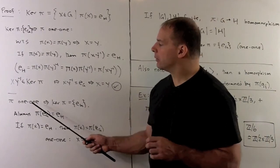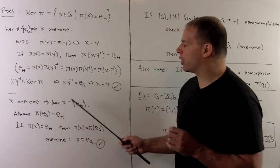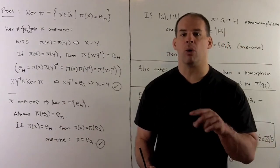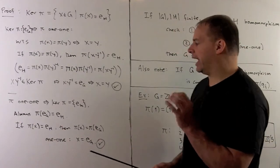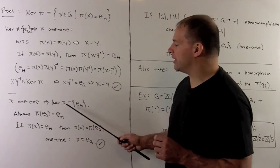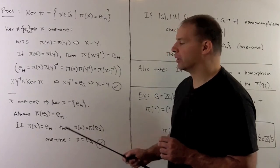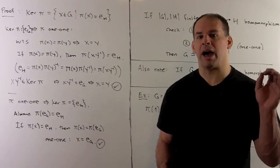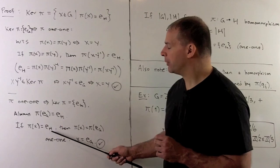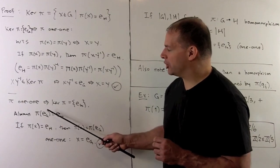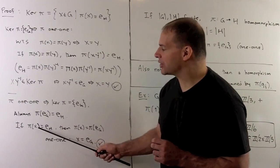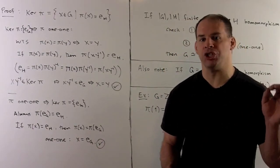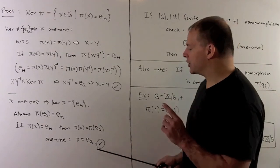In the other direction, we show that if pi is one-to-one, then the kernel of pi equals just the identity element of G. Whenever we have a homomorphism from G to H, the identity element of G is carried to the identity element of H. So if there were any other element in the kernel — some x with pi of x equal to the identity in H — then pi of the identity of G would equal pi of x, and by the one-to-one property, x would equal the identity of G. That completes the second direction.